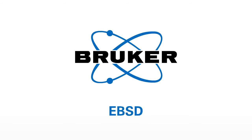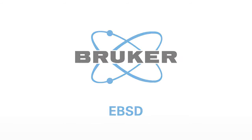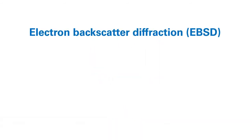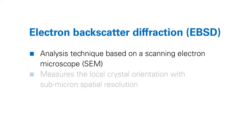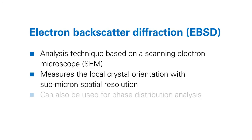Electron backscatter diffraction, or EBSD for short, is an analysis technique based on a scanning electron microscope, SEM. It measures the local crystal orientation with submicron spatial resolution and can also be used for phase distribution analysis.